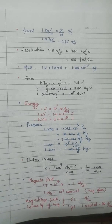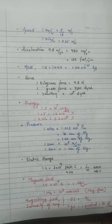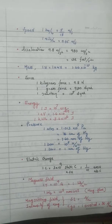For speed conversions: one kilometer per hour is converted to meter per second by multiplying by 5/18. One mile per hour equals 0.45 meter per second. For acceleration: 9.8 m/s² equals 980 cm/s² and equals 32 feet per second square.